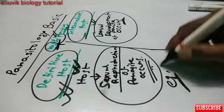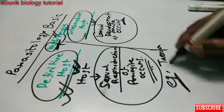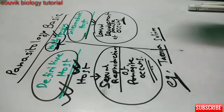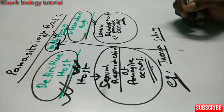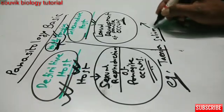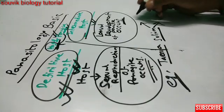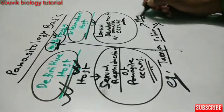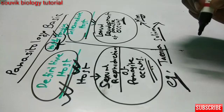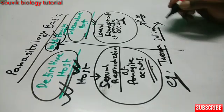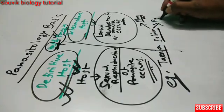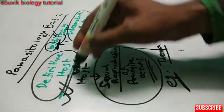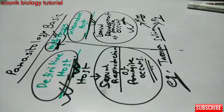If you see the example, one example such as Taenia solium, also known as pork tapeworm. Taenia solium has two hosts. The definitive host of Taenia solium is man, because here sexual reproduction occurs. And the intermediate host of Taenia solium is pig, because here larval development occurs.